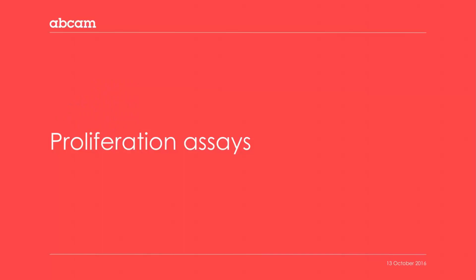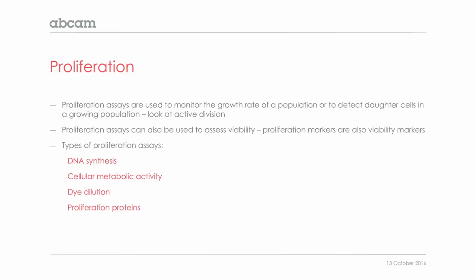I will now introduce proliferation assays. Proliferation assays look at how cells in a population are actively dividing. Because a dividing cell is definitely a viable cell, proliferation assays are commonly used as viability assays, and many researchers will use proliferation assays to measure viability as well. The different types of proliferation assays include detection of DNA synthesis, measuring cellular metabolic activity, dye dilution assays, and staining of proliferation proteins.